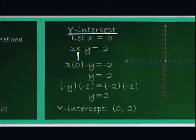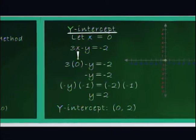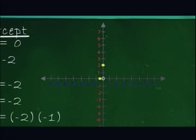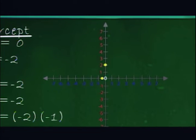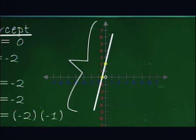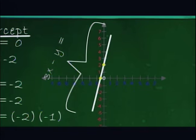We finally have two points which correspond to the x and y-intercepts: negative 2 thirds, 0, and 0, 2. By connecting these points, we are able to graph the linear equation 3x minus y equals negative 2.